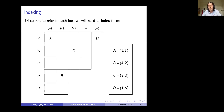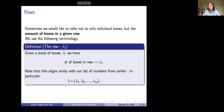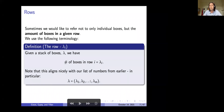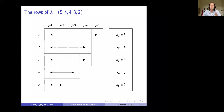Now we want to do something about the rows. Given a stack of boxes lambda, we let the number of boxes in row i equal lambda_i. This aligns nicely with our list of numbers. So lambda = (lambda_1, lambda_2, ..., lambda_m). For example, lambda_1 asks: how many boxes are in row 1? For the diagram 5, 4, 4, 3, 2, lambda_1 = 5, lambda_2 = 4, lambda_3 = 4, and so on.